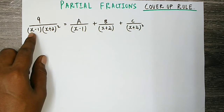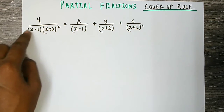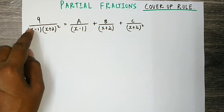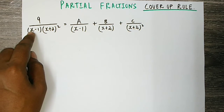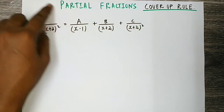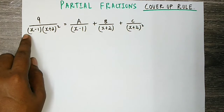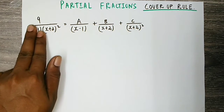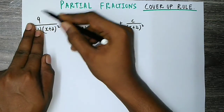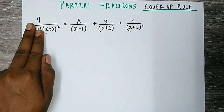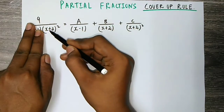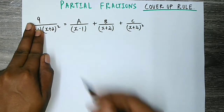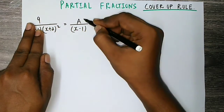We will check the value where the factor equals zero. If we check x equals 1, we substitute x equal to 1 into the whole term. So 9 divided by (x plus 2) whole square becomes 9 divided by (1 plus 2) whole square. That is 9 divided by 3 squared. So 9 divided by 9 equals 1.